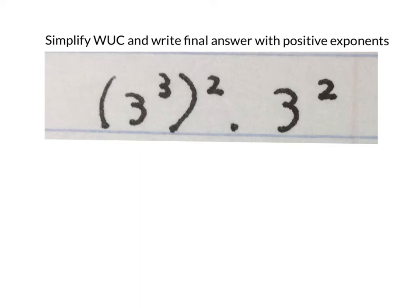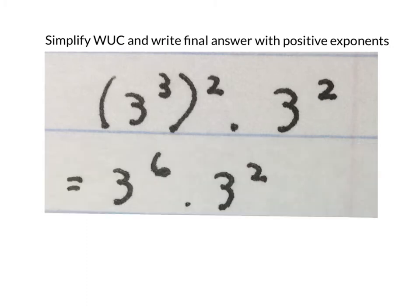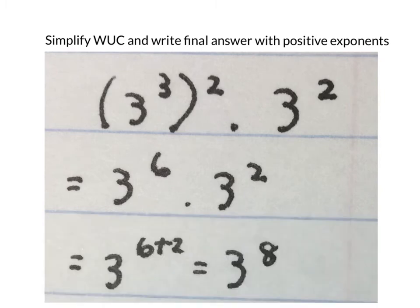The next expression looks like this. Firstly we will times that 3 with that 2 and let this part wait. It gives us 3 to the power of 6 times 3 to the power of 2. Then we write down the base and we add the exponents to get 3 to the power of 8.